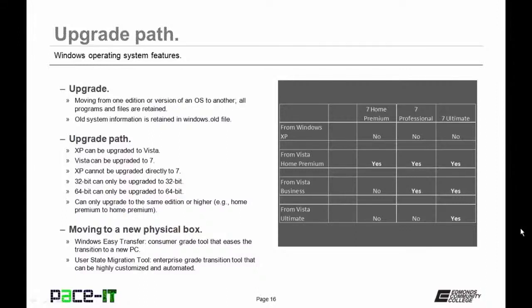If you're moving to a new physical PC, you might want to consider Windows Easy Transfer — a consumer-grade tool that pulls information from the old machine and deposits it on the new machine. For the enterprise, Microsoft introduced the User State Migration Tool, which can highly automate the transition from one physical machine to another.